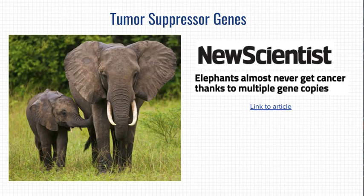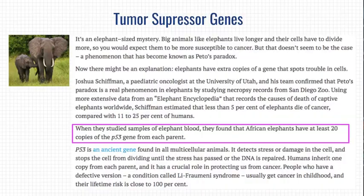A more fun, happy application of tumor suppressor genes is about elephants. It wasn't clear to scientists why elephants almost never get cancer, even though they are large and pretty long-lived animals. But when they were finally able to study this, they found that African elephants have extra tumor suppressor genes. That's pretty cool.